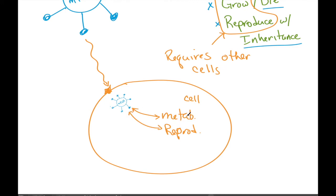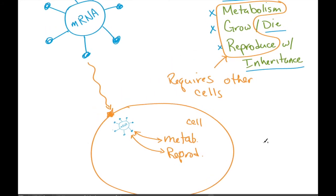and it gets the energy as provided from the cell. So the virus uses other cells to actually perform three of the key functions in terms of life, which is the metabolism and the reproduction.